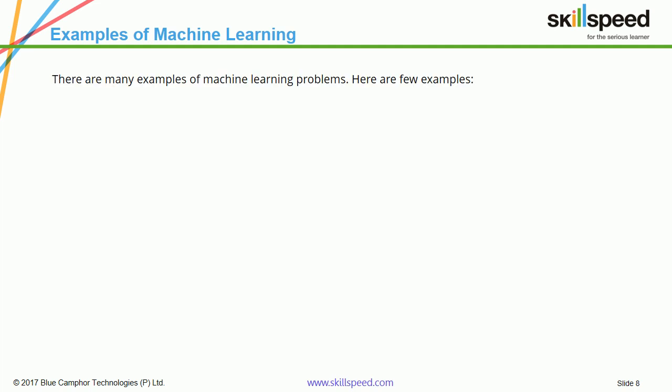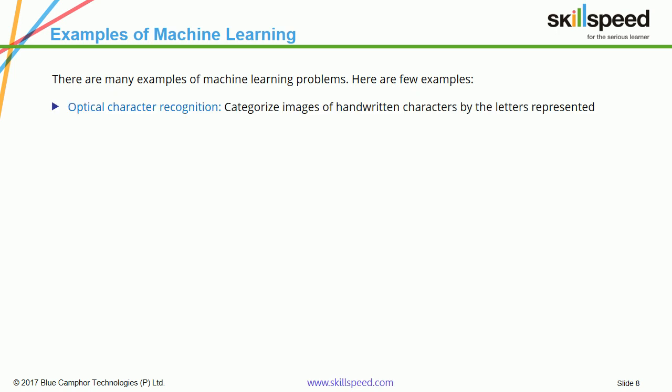There are plenty of examples of machine learning in the world. The first is Optical Character Recognition, which is like handwriting-to-text conversion. These days, higher-end smartphones have a way in which you can write something on the screen and they translate that to text — it uses machine learning. Face detection also uses machine learning.